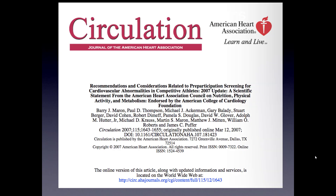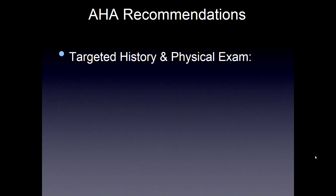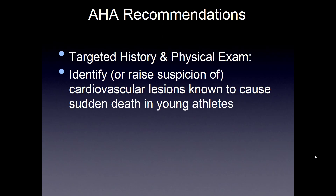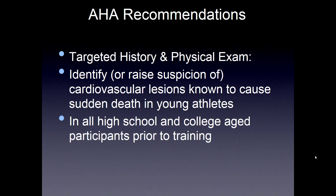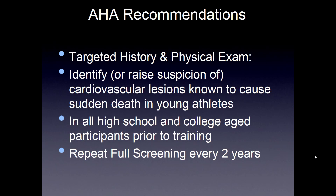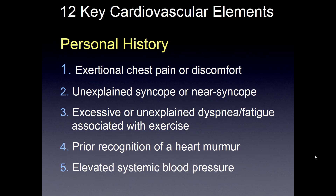These recommendations remain consistent. You get a targeted history and physical exam, you identify cardiovascular lesions known to cause sudden death, and it should take place in all high school students and college-age participants prior to the initiation of their training. You repeat the full screening at least every two years, with an interval history and blood pressure yearly. The key elements are to ask about a personal history in this athlete.